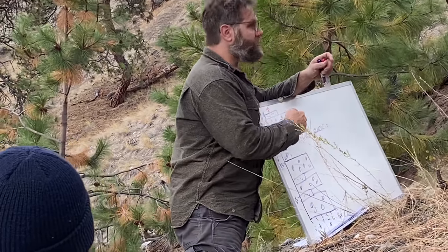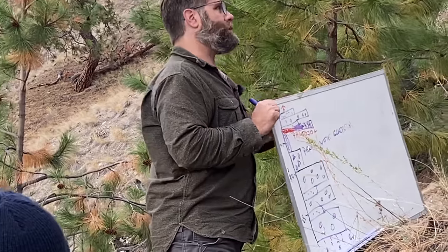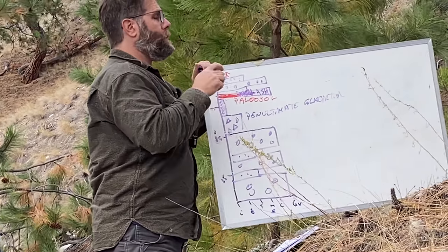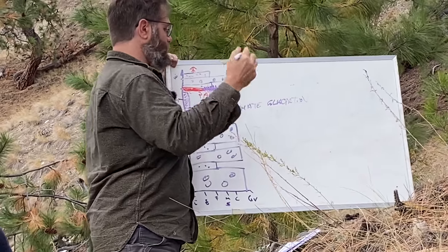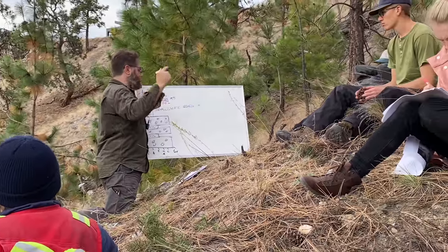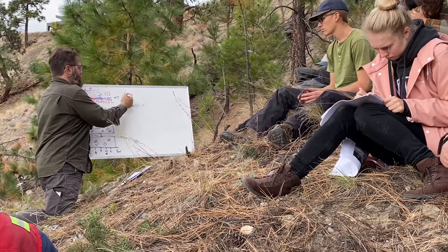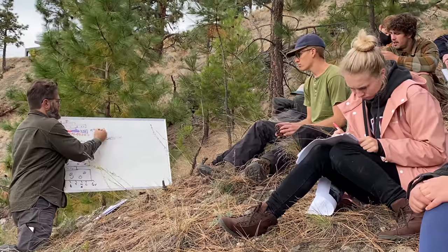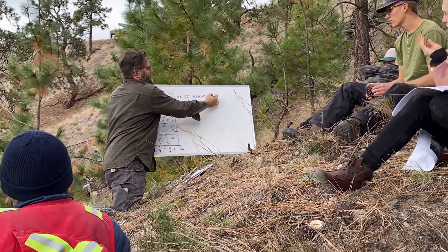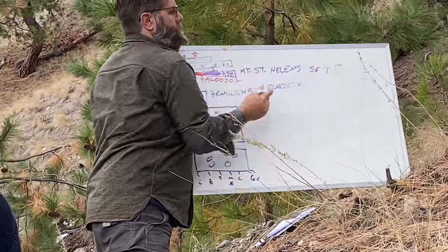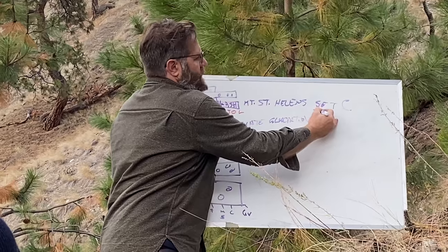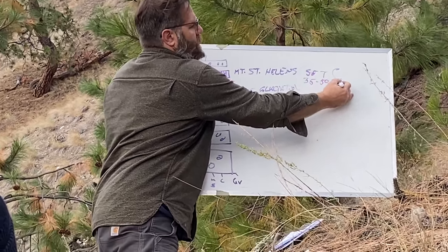Volcanoes in this region have been erupting for so long that we call their outputs 'sets' — a series of layers produced by different eruptions. The set from this particular Mount St. Helens eruption is called Set C, like the letter C. The age of Mount St. Helens Set C is 35,000 to 50,000 years before present — a huge range, partly because we're pushing the limits of radiocarbon dating.